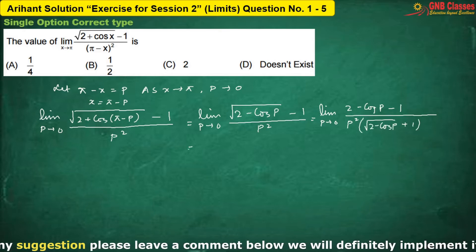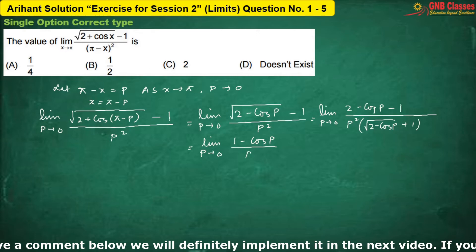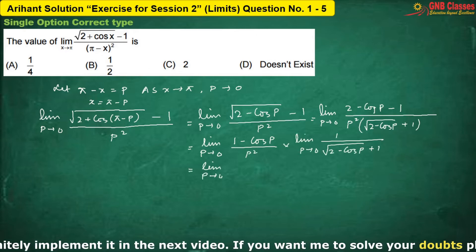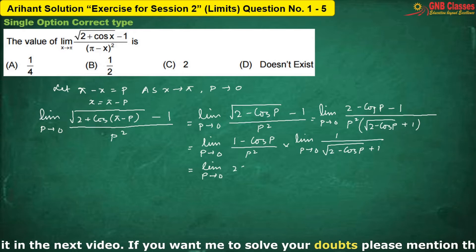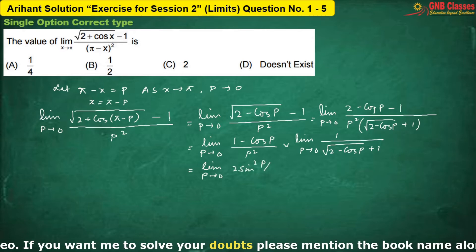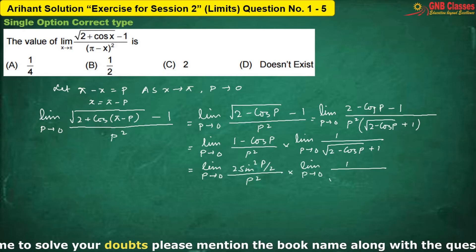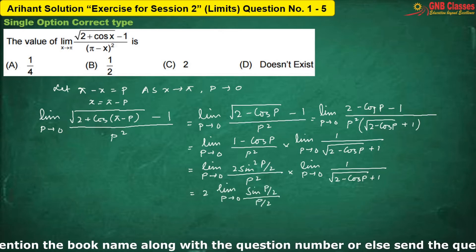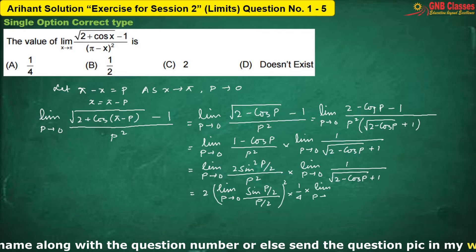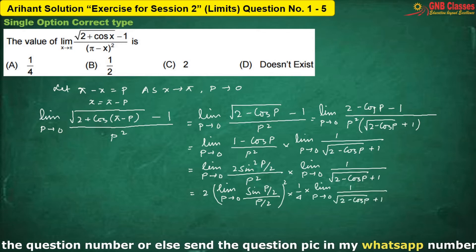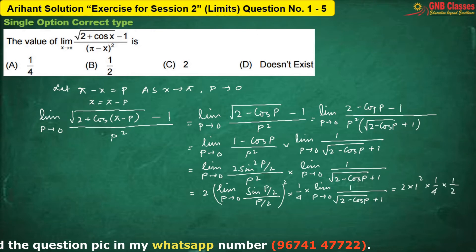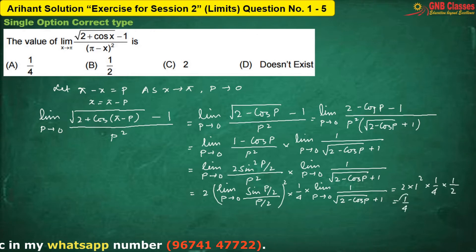So we are having in the numerator. Now, 1 minus cos p can be written as 2 sine square p by 2. Now, if I put the limits, we are going to get. Therefore, the answer is 1 by 4. Hence, option A is correct.